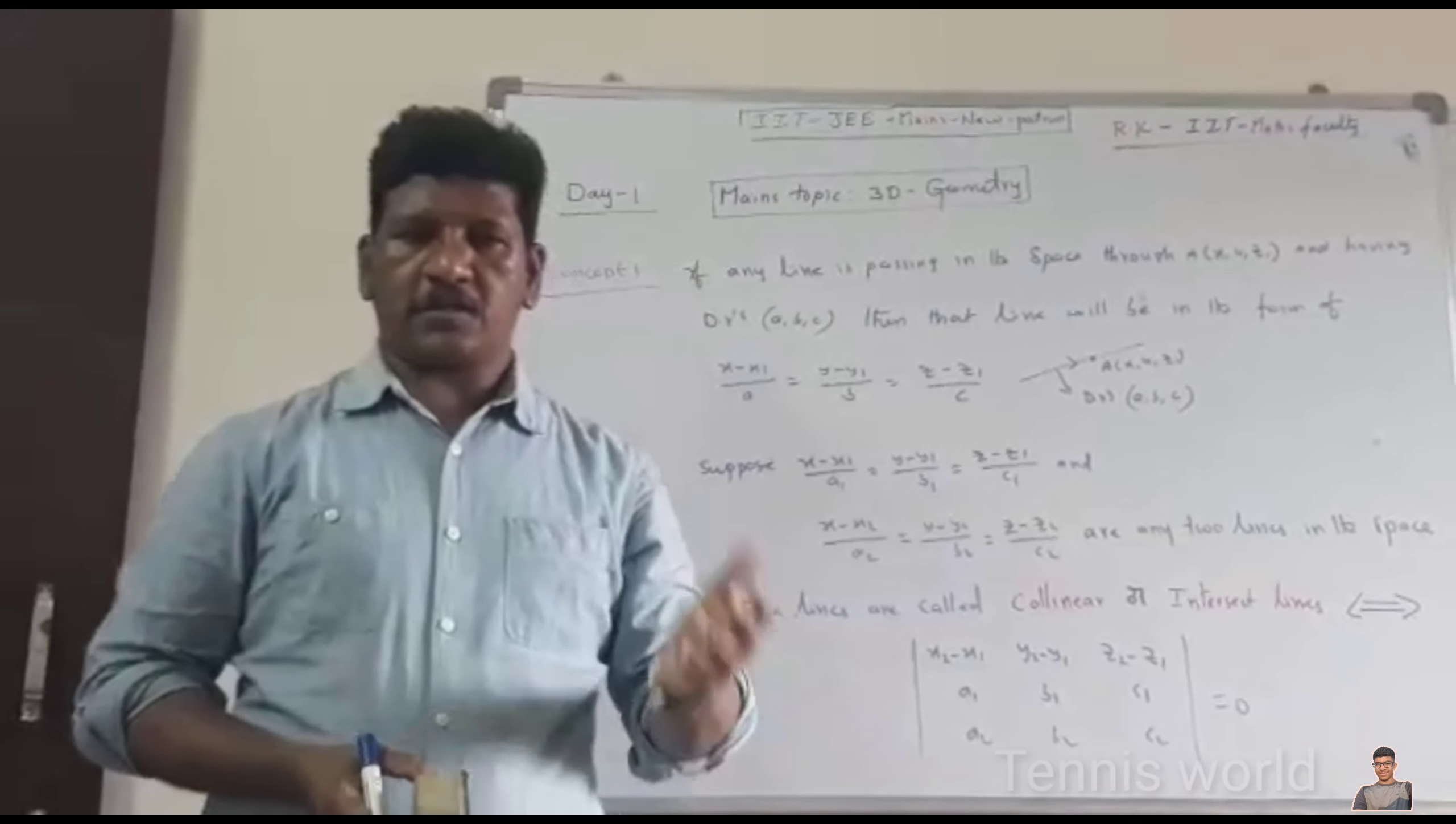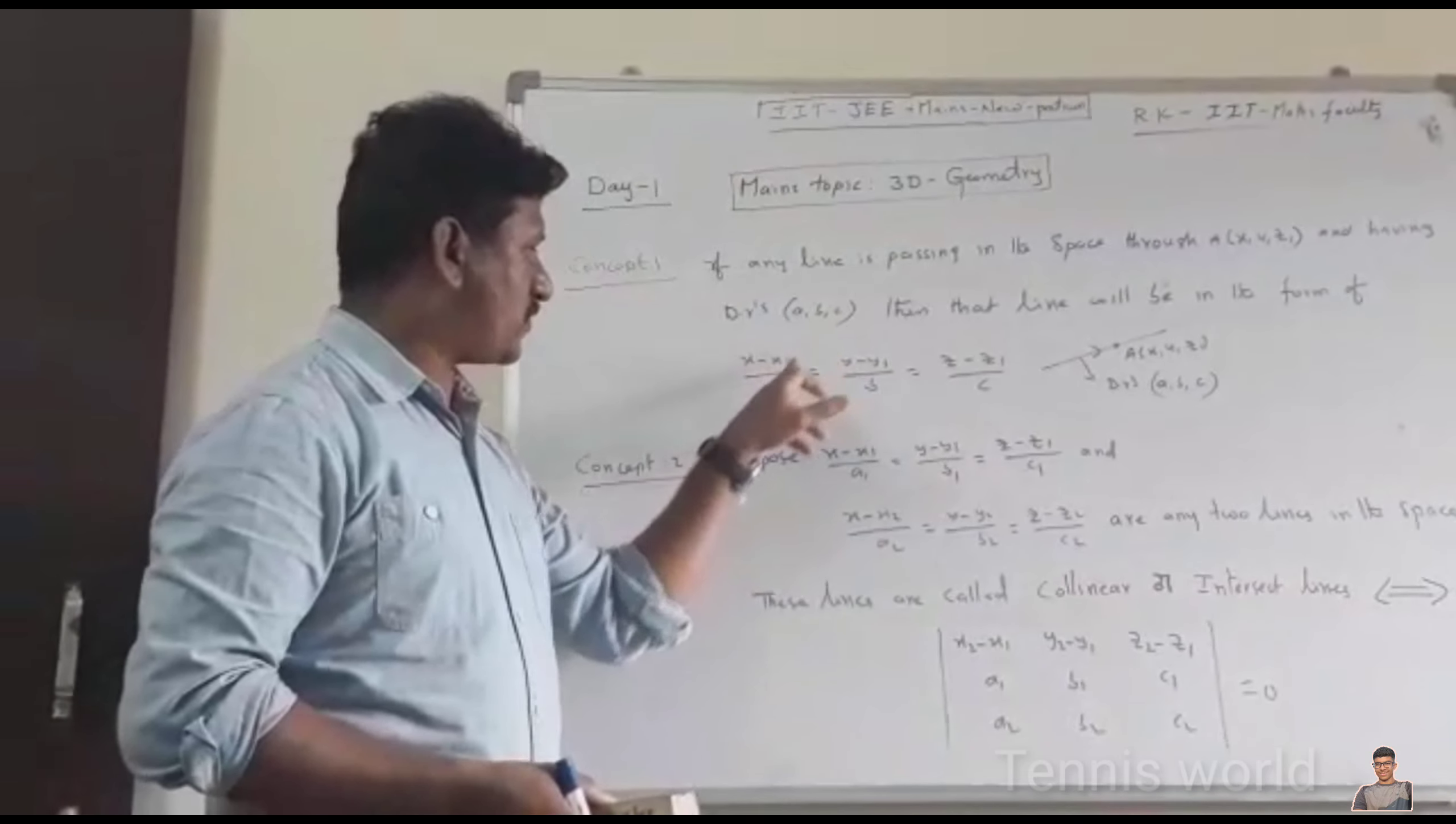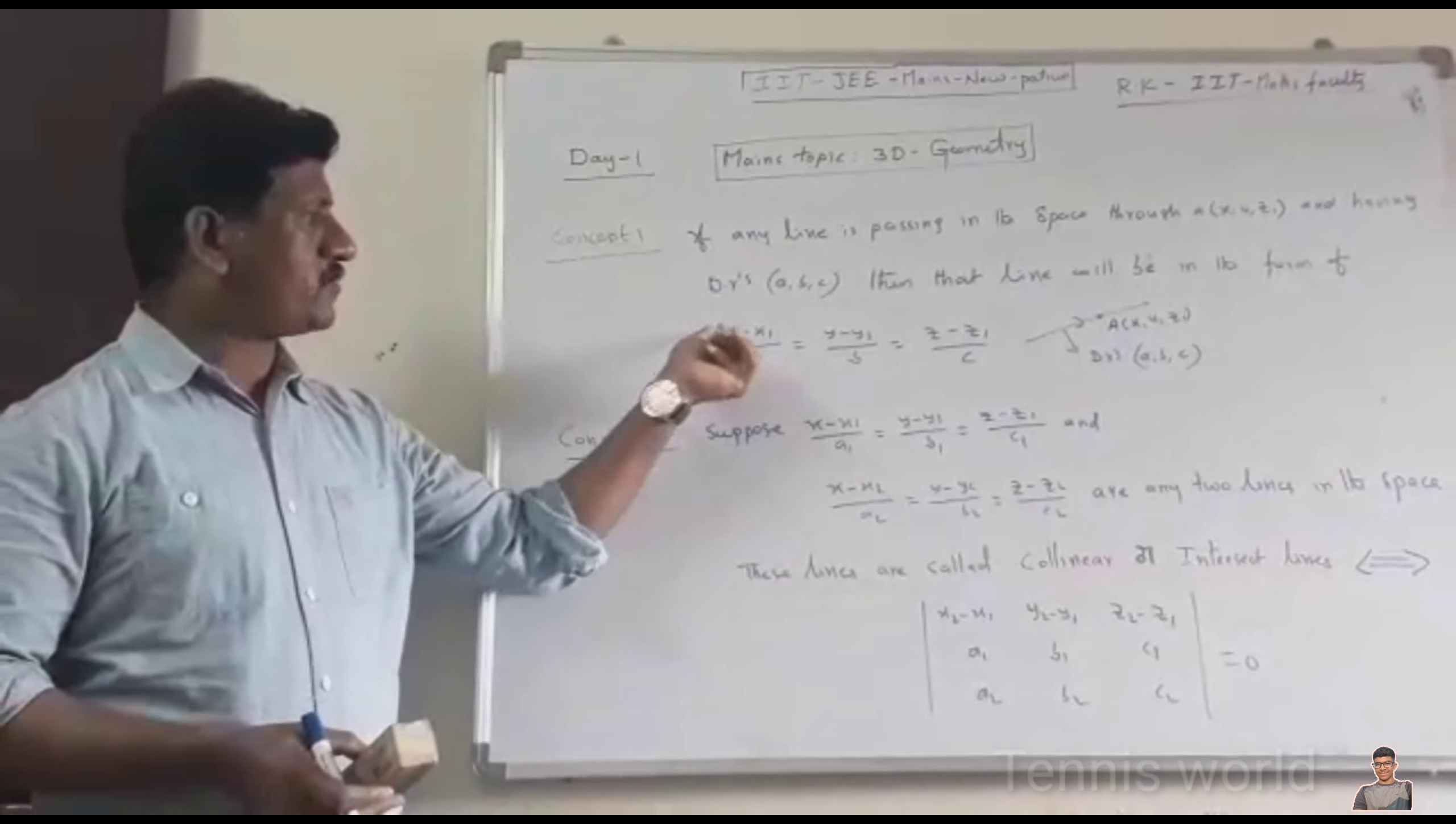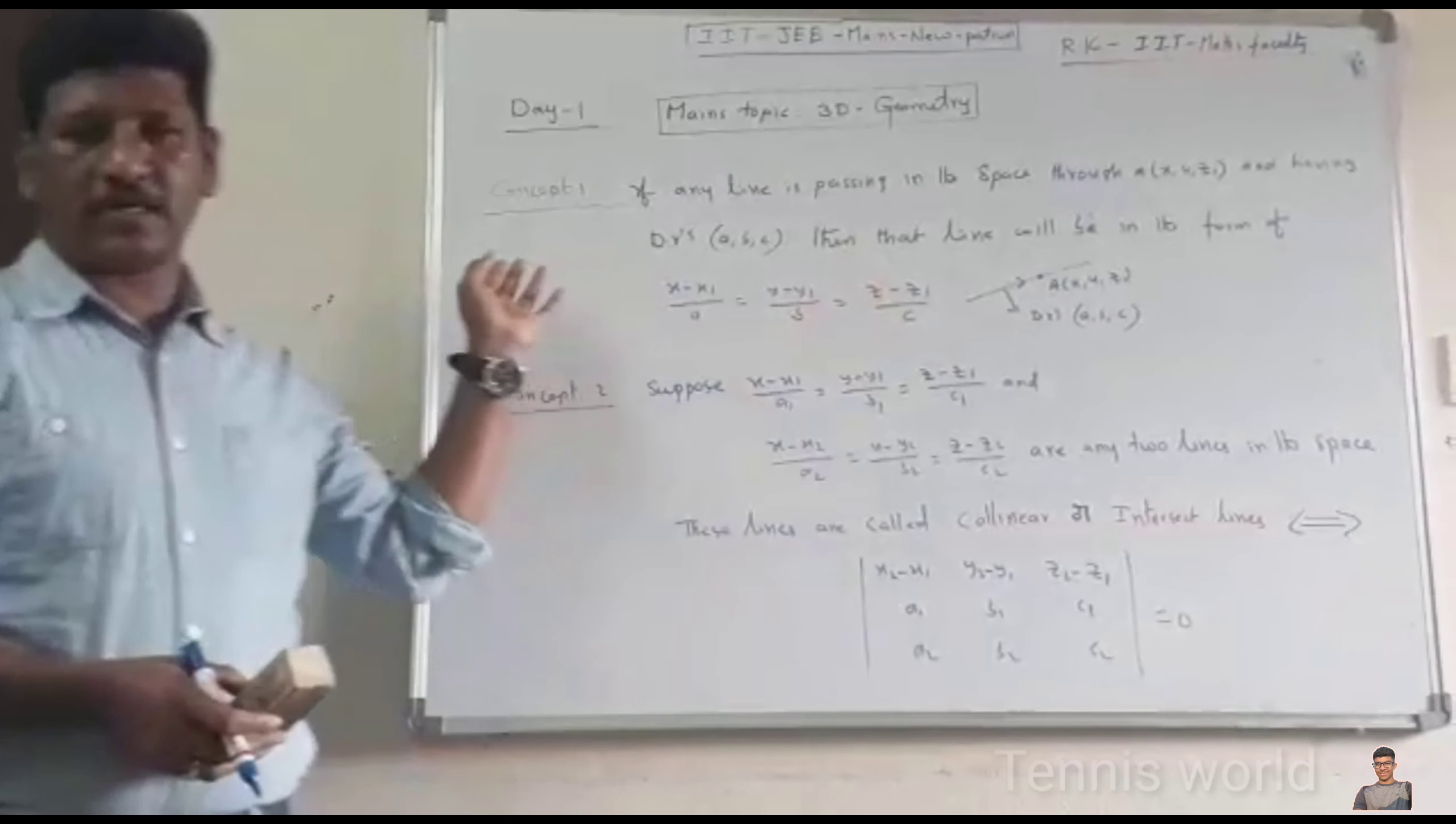In this 3D Geometry, I am going to explain JEE Main's basic problems concept. If any line is passing in the space through the point (X1, Y1, Z1) and having direction ratios a, b, c, then the line will be in the form of (X-X1)/A = (Y-Y1)/B = (Z-Z1)/C. Which line is passing in the space, that line is called 3D line. This is concept number 1.